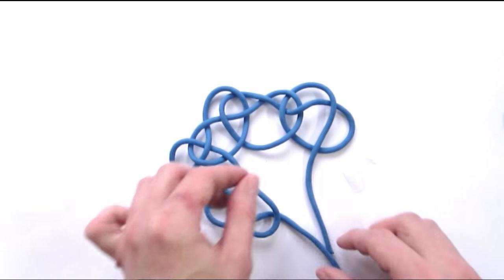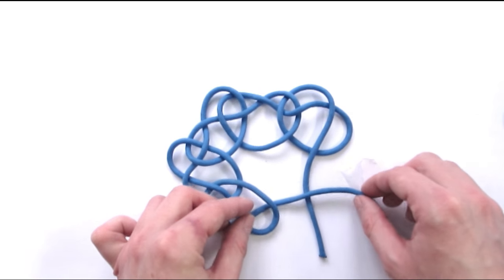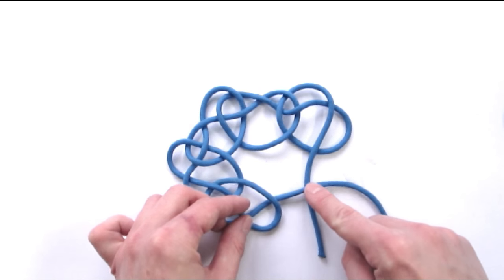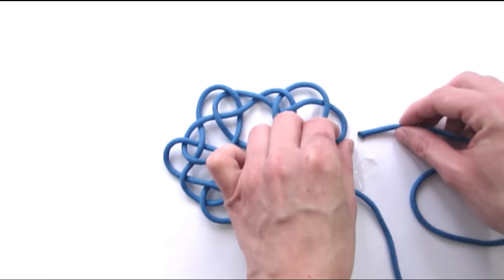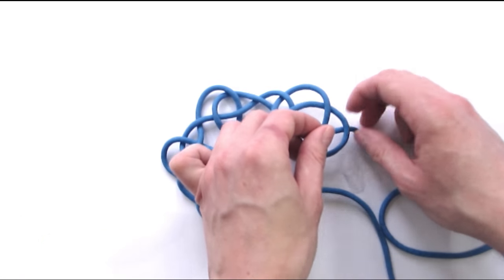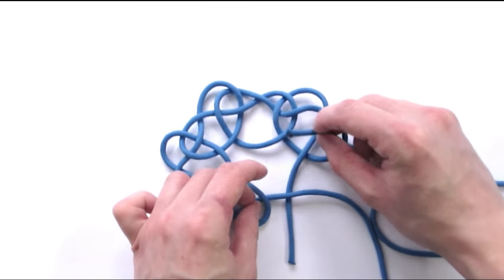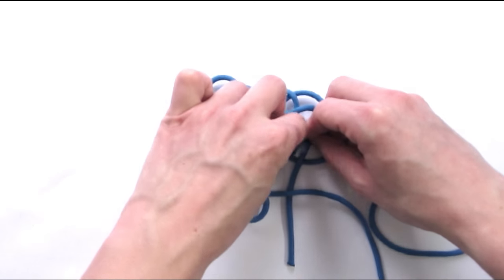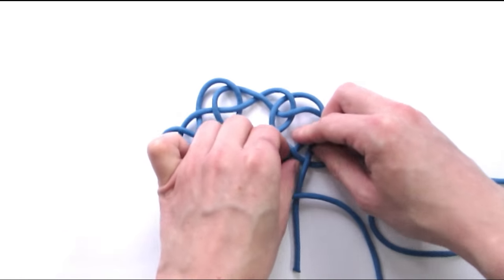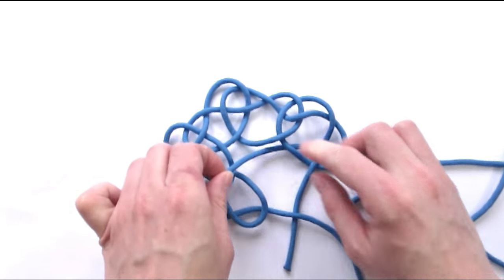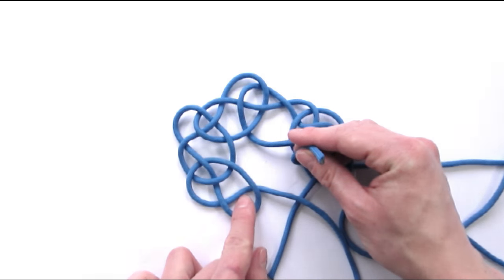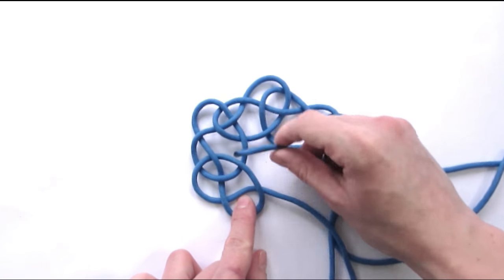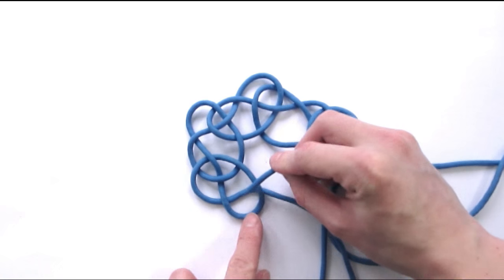We're going to take our working end, pass it over the standing end here, then go under, over and under. And then here we're going to do the same as we did before, going over, under, over.